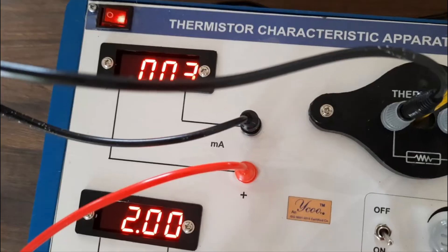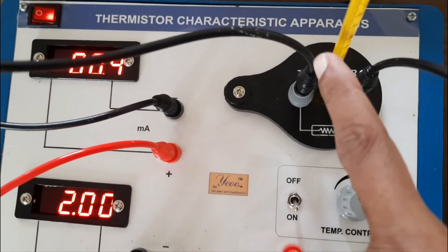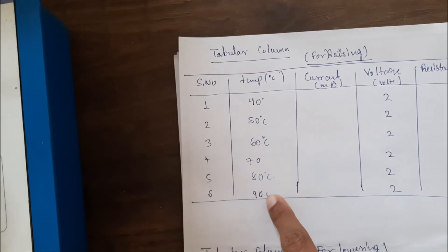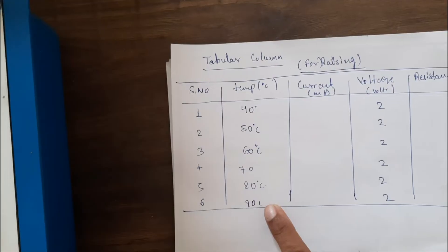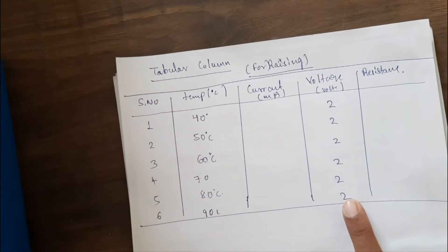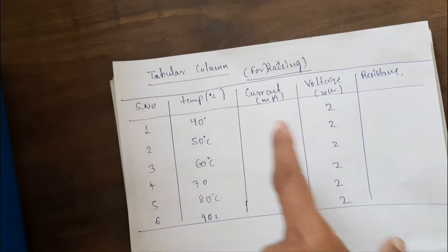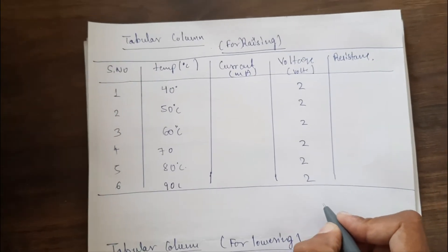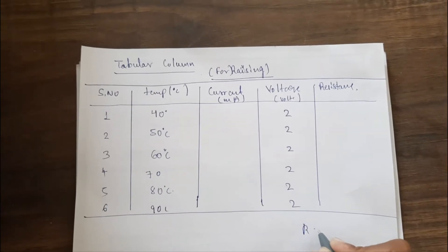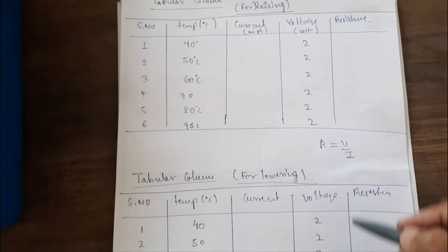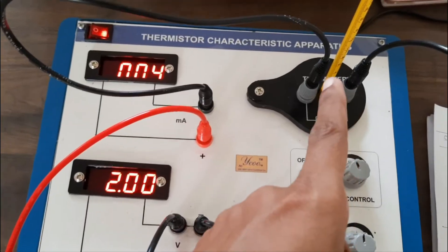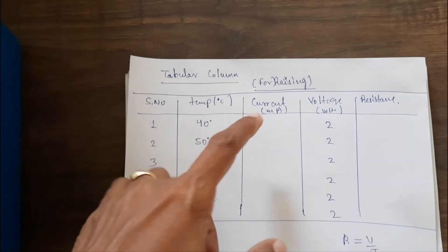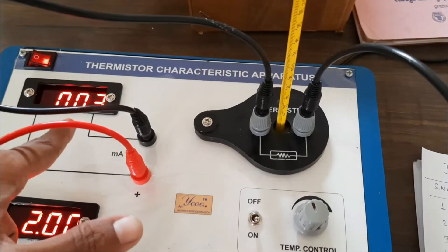Note the current from the ammeter display at each temperature reading. For example, at 40 degrees Celsius, note down the current — take five to six readings up to about 90 degrees Celsius. Voltage is kept constant at 2 volts. Once you have the current and voltage values, calculate the resistance using R = V/I. Record current and temperature for both rising and lowering of the temperature.